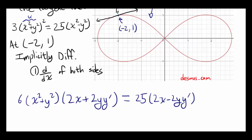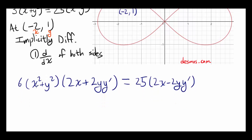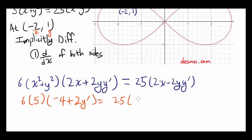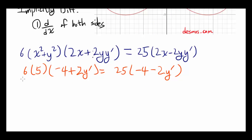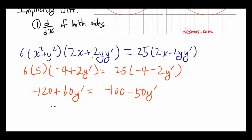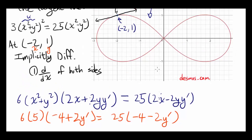Now plug in the point (negative 2, 1). You have 6 times (x squared plus y squared): x squared is 4, y squared is 1, which adds up to 5. So: 6 times 5 times (negative 4 plus 2 y prime) equals 25 times (negative 4 minus 2 y prime). Simplifying: 30 times negative 4 is negative 120, and 30 times 2 is 60 y prime, giving negative 120 plus 60 y prime equals negative 100 minus 50 y prime. This simplifies to 110 y prime equals 20, so y prime equals 20 over 110, or 2 over 11. That is the slope of our line.